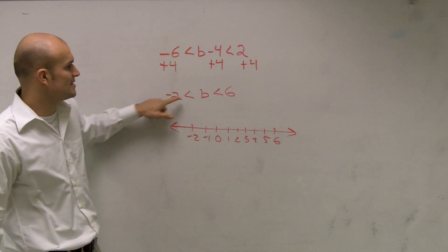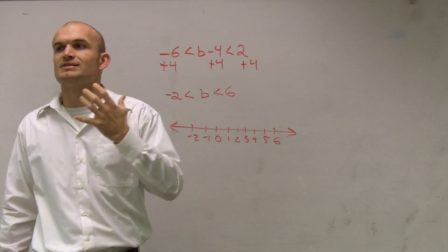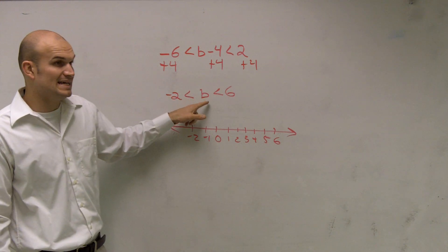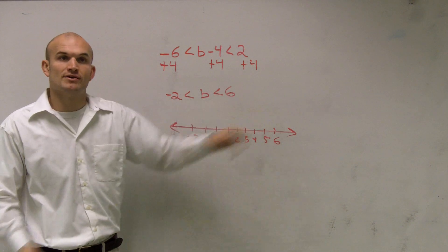So what it says is negative 2. It says b, and always remember, if you want to say this out loud, just always say it with the variable first. b is greater than negative 2. So that means all numbers that are greater than negative 2.